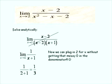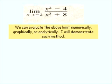So we've seen the numerical, the graphical, and the analytical approach to solving this limit. Here's another example. We can evaluate the above limit numerically, graphically, or analytically — I will demonstrate each method. We have the limit as x approaches negative 2 of x squared minus 4 over x cubed plus 8.